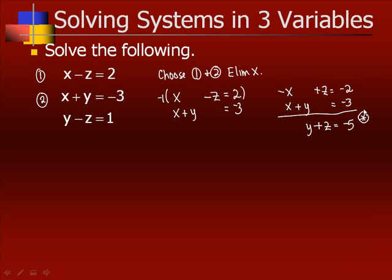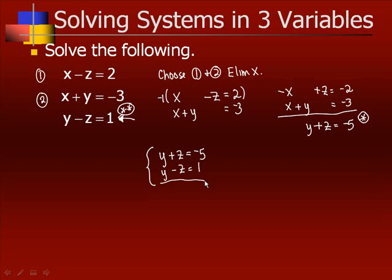For the second pair of equations, this is a special case: equation 3 doesn't even have an x, so it becomes equation star star on its own. So we have y plus z equals negative 5 and y minus z equals 1 as our two equations with two variables. We've already got opposite z's, so when we add those we get 2y equals negative 4, or y equals negative 2.